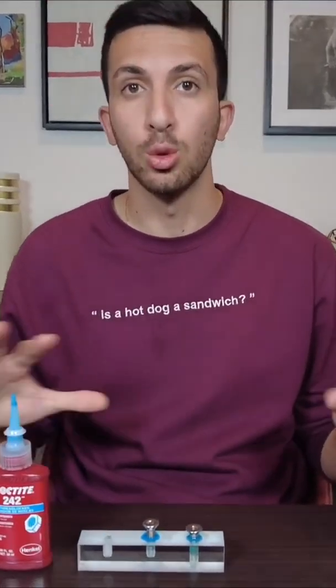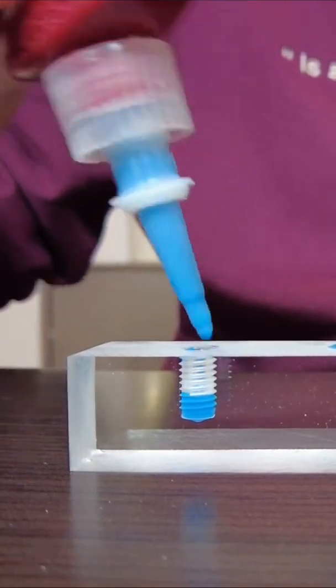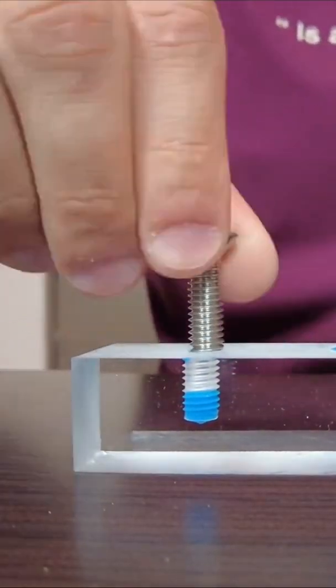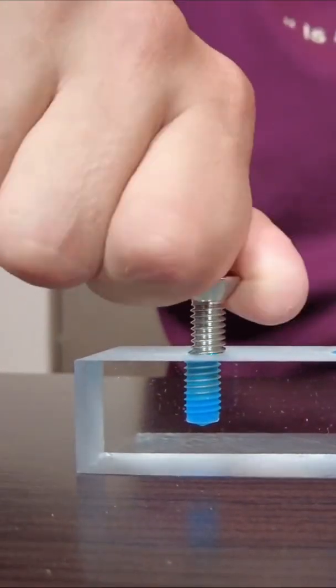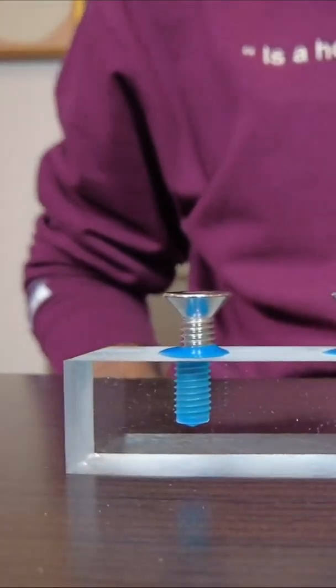So on this last hole, let me show you how to properly apply thread locker to a blind hole. Fill the hole itself with some thread locker, and now instead of the air climbing up those threads, the thread locker will migrate upwards and your entire length of threads will be fully coated for a perfect hold.